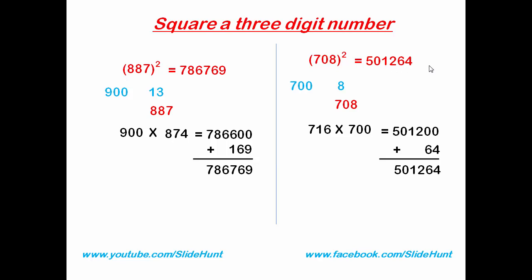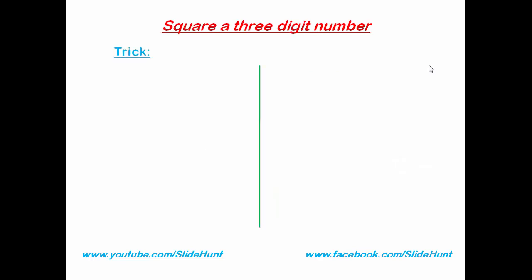At the beginning of the video I promised I'd tell you some tricks, so let's discuss that. Here we divide all three-digit numbers into two parts. In the first part, the numbers range from 100 to 316, and in the second part the numbers range from 317 to 999.